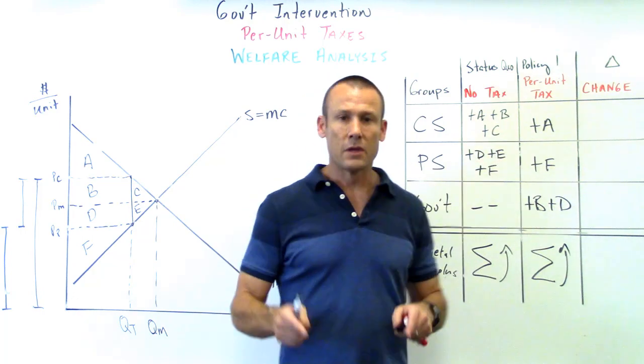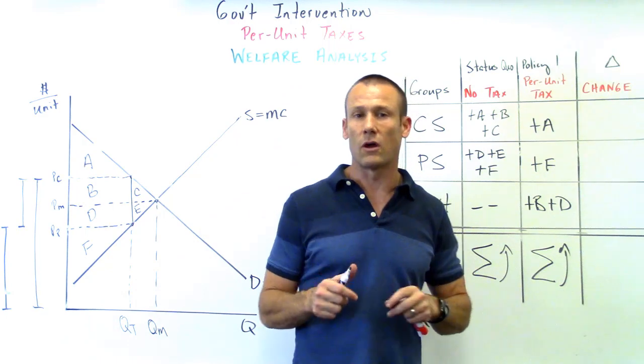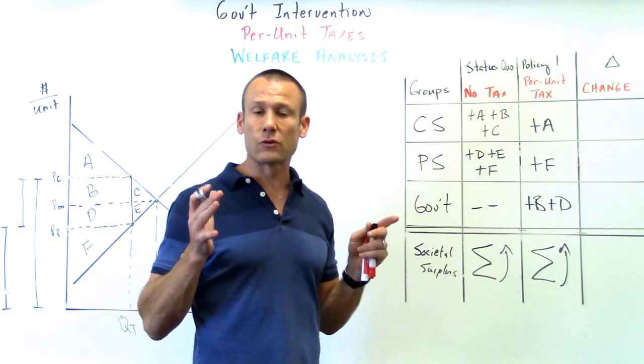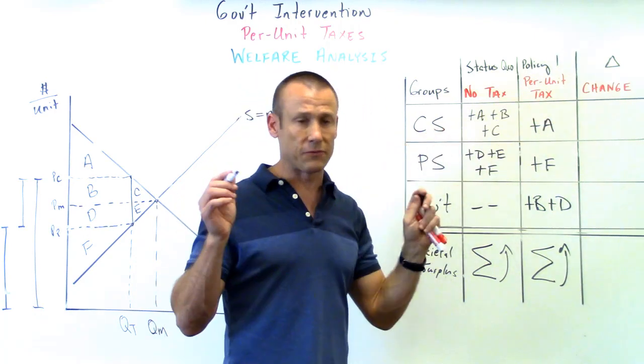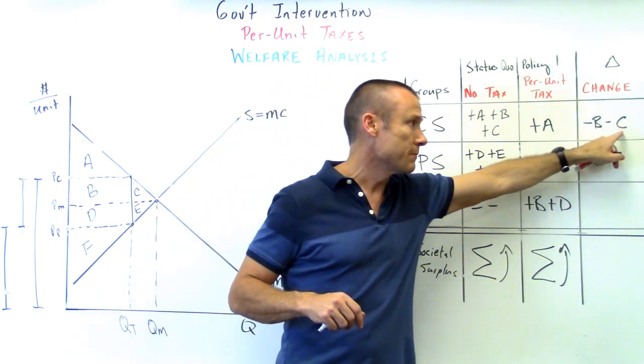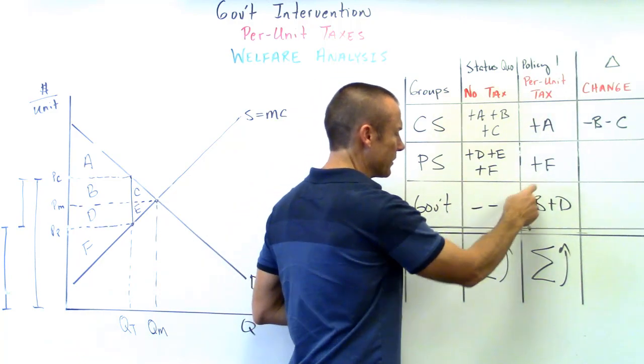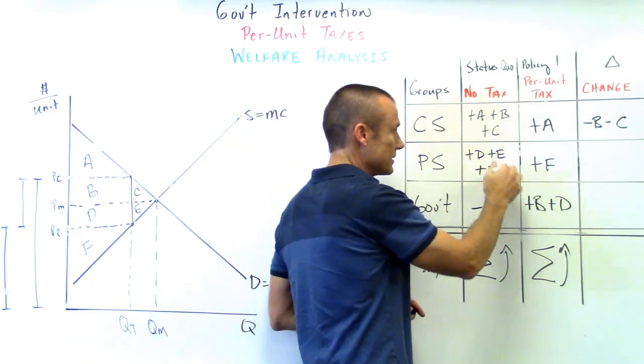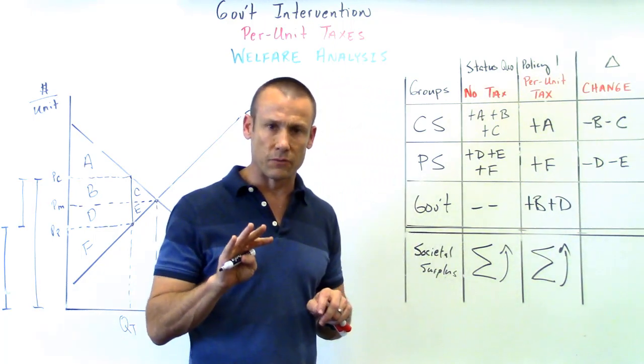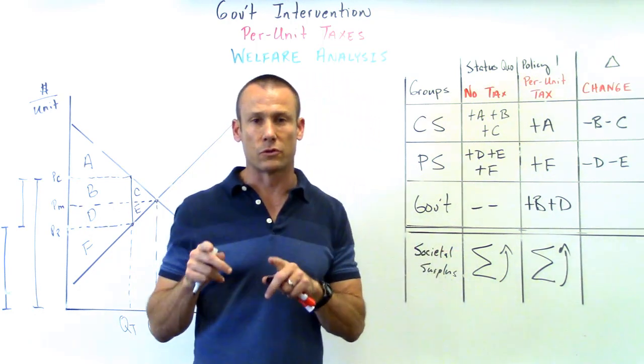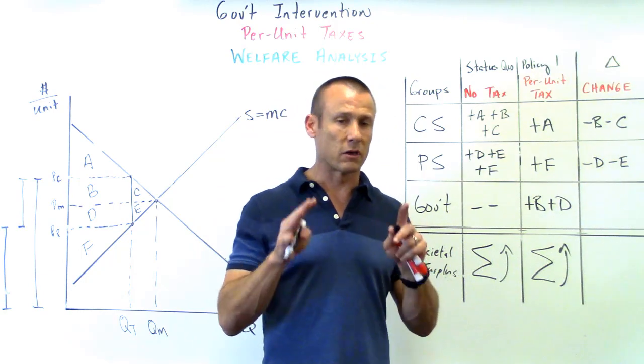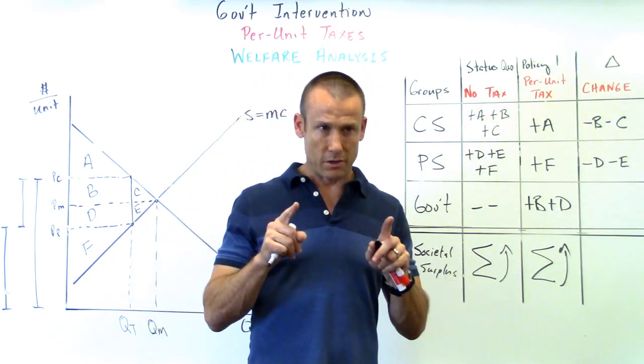We've done all the hard work, we just got to do this last column. How are the different groups impacted by a per-unit tax? Consumer definitely hurt - minus b minus c. Once that per-unit tax is put in place they lost a lot of surplus. Producer, same situation - per-unit tax in place they only get f, they lost d and e. So minus d minus e, producer also worse off. This allows us to remind ourselves - per-unit taxes hurt both the consumer and the producer. They share the burden, not always equally, but they share the burden as long as demand or supply is not perfectly inelastic.